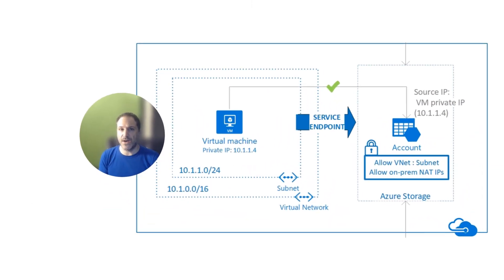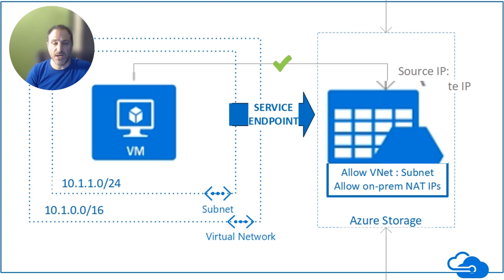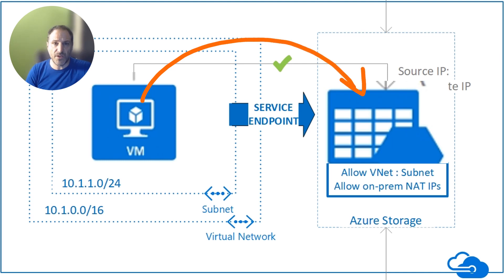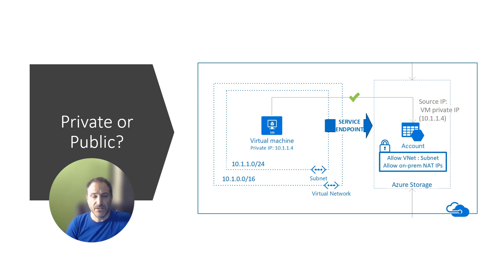So here is the scenario. We have on the left a virtual machine, an infrastructure as a service offering that is running on a VNet and has a private IP. On the right we have a storage account, or any other platform as a service offering like a database as a service, an application service, or Azure Active Directory. The virtual machine is consuming from that platform as a service — it is connected to that service. What do you think this communication will be? Private or public?